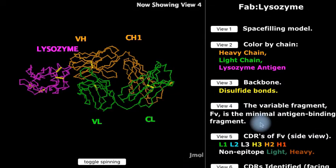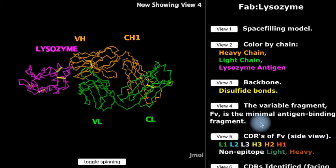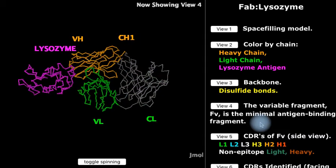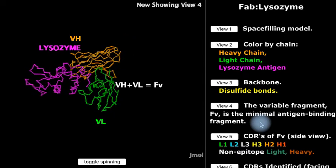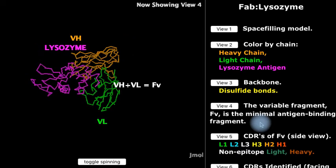Now we're going to get rid of two immunoglobulin domains, the two farthest from lysozyme, leaving just a pair that bind to lysozyme. This pair, called the variable fragment or FV, makes up the paratope that binds to the lysozyme epitope.